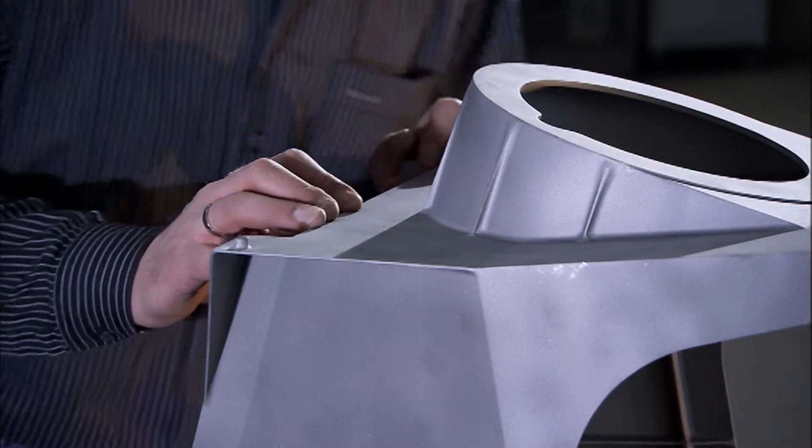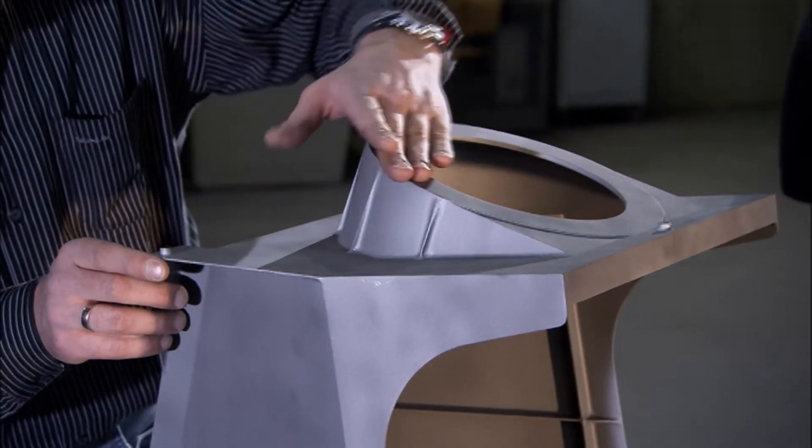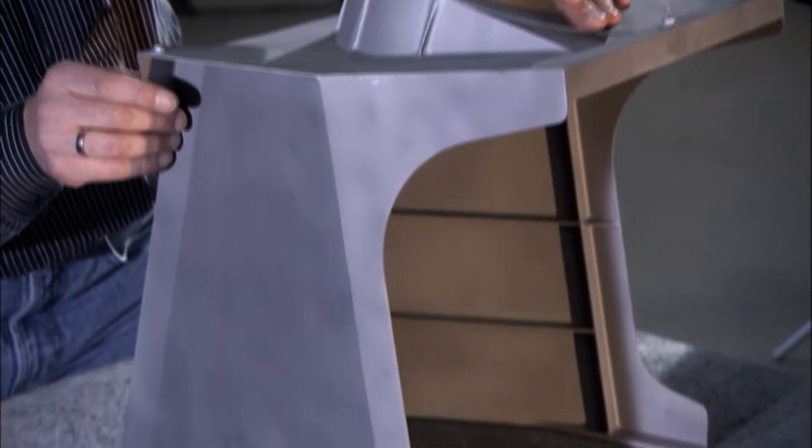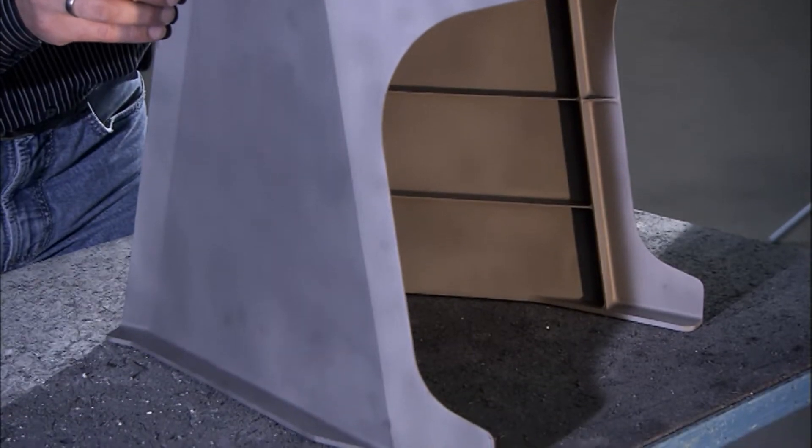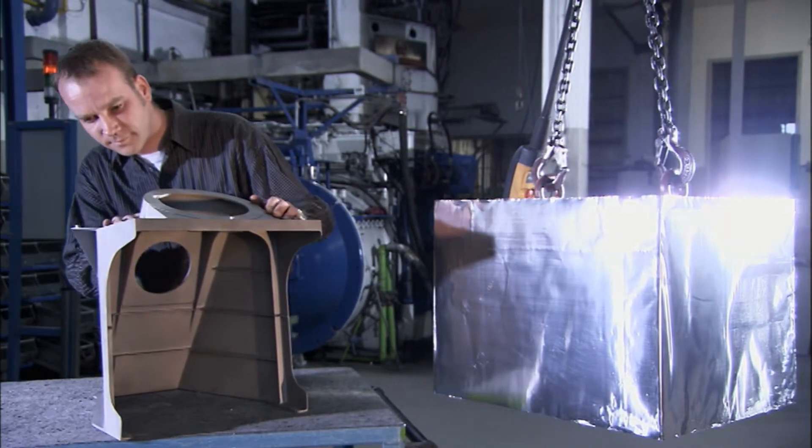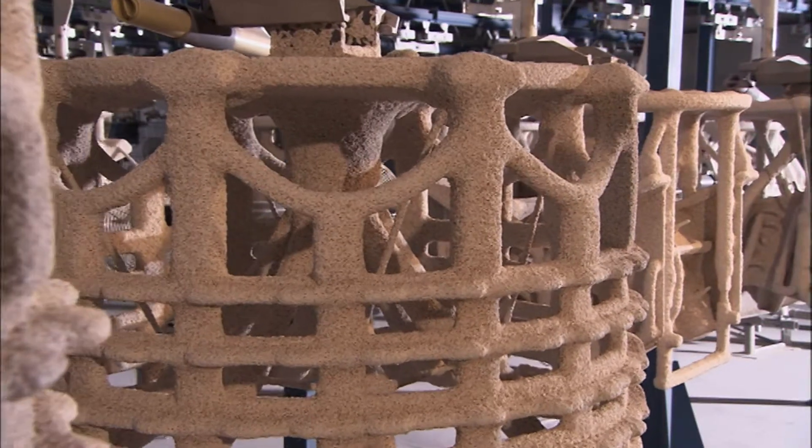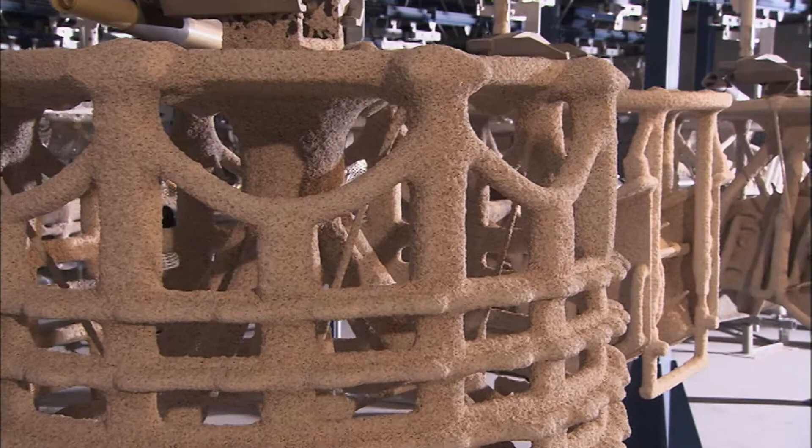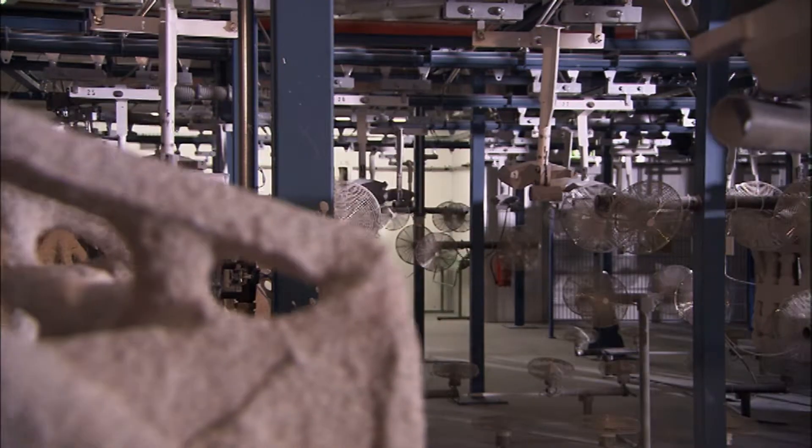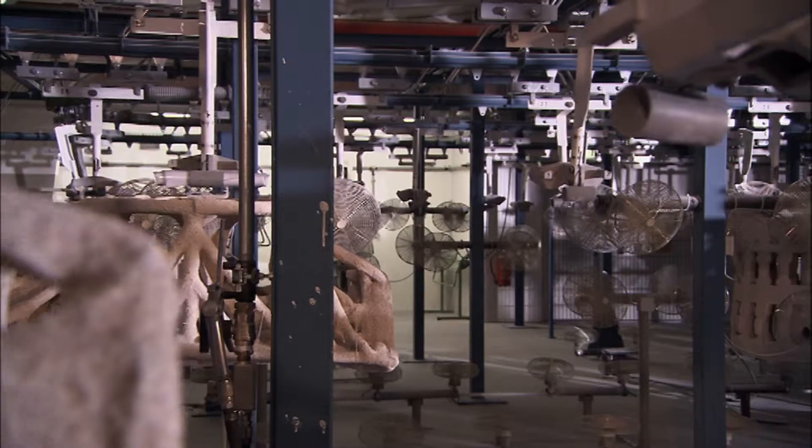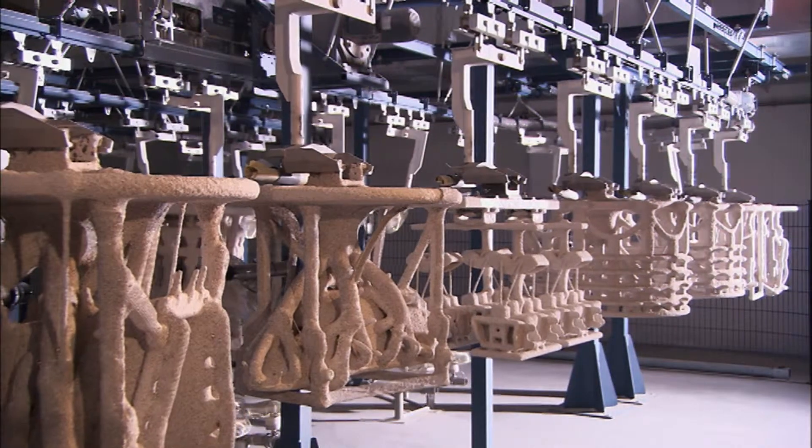Until recently, the A380's engine mount had to be milled out of a giant block of titanium. Ninety percent of it was waste. In an effort to save resources and money, the company developed a brand-new production process, casting the mounts instead of milling them.